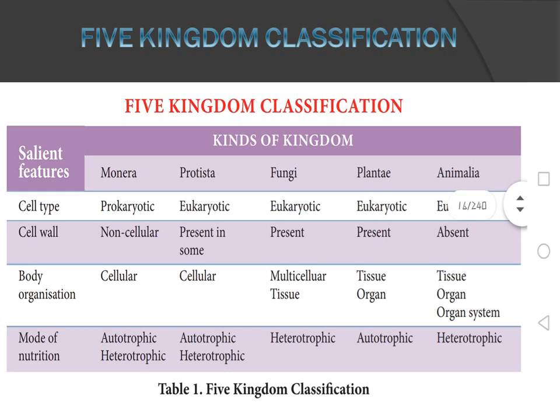For mode of nutrition: Monera can be autotrophic or saprotrophic; Protista can be autotrophic or heterotrophic; Fungi are heterotrophic; Plantae are autotrophic; Animalia are heterotrophic. The key difference between the three-domain and five-kingdom systems is that in the five-kingdom system, Archaea and Bacteria are both grouped together into one kingdom called Monera.